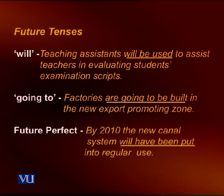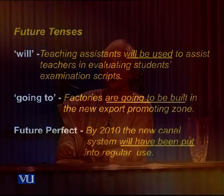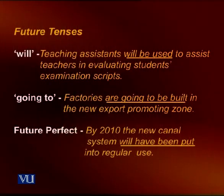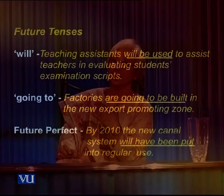Future tenses in passive sentences: Simple future — 'teaching assistants will be used to assist teachers in evaluating students' examination scripts.' The going-to future — 'factories are going to be built in the new export promoting zone.' Future perfect — 'by 2010, the new canal system will have been put into regular use.' All these sentences were in the passive, showing how different tenses are used.